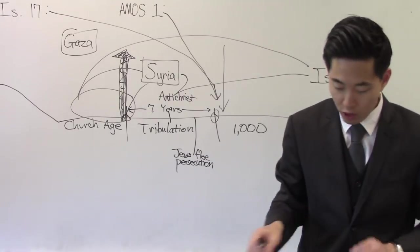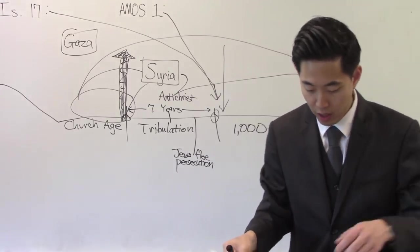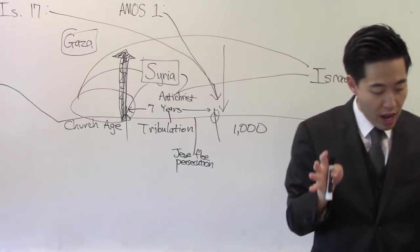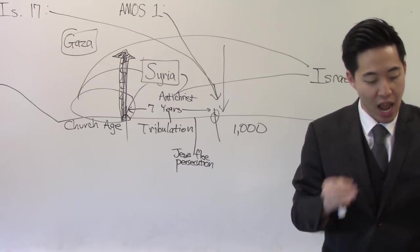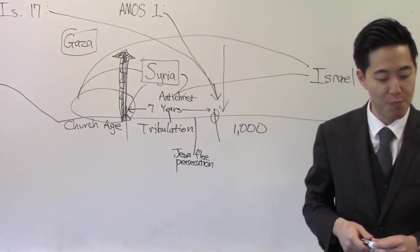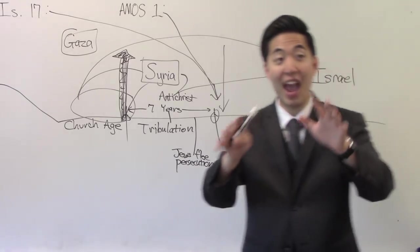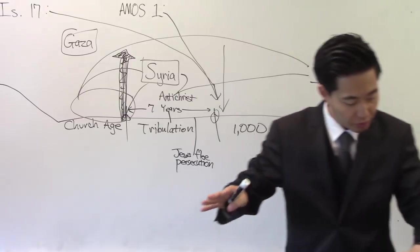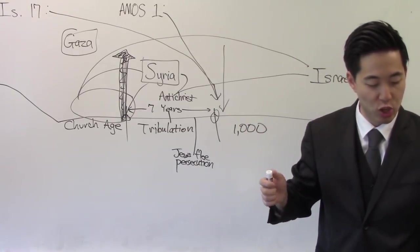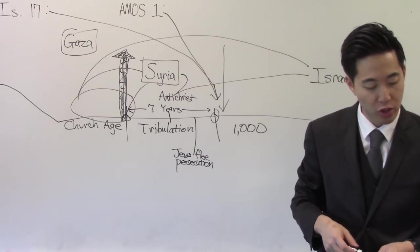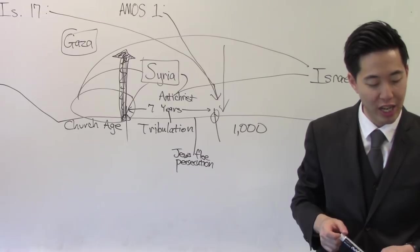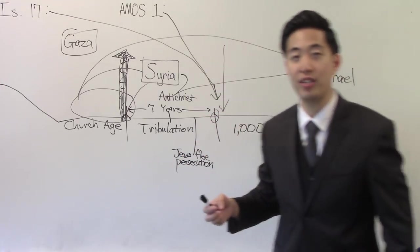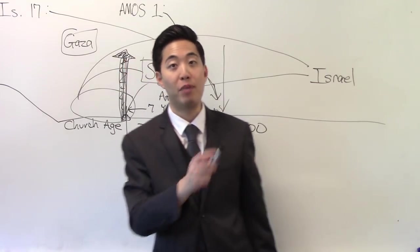So look at Amos chapter 1 now. Your hand's already there, so I'll go ahead and read it. Notice at verse 3, verse 2. What's the context, folks? What's the context here? Verse 2. And he said, the Lord will roar from Zion and utter his voice from Jerusalem and the habitations of the shepherds shall mourn and the top of Carmel shall wither. See that? That second advent. The Lord's coming down out of Zion and paying back Israel against their enemies. Look at these locations. Thus saith the Lord for three transgressions of who? Damascus. And for four I will not turn away the punishment thereof because they have threshed Gilead with threshing instruments of iron.